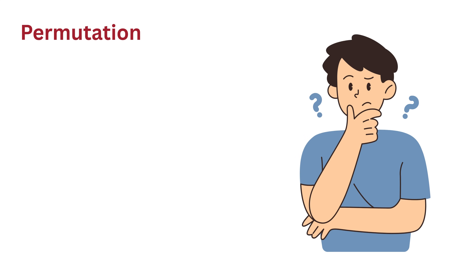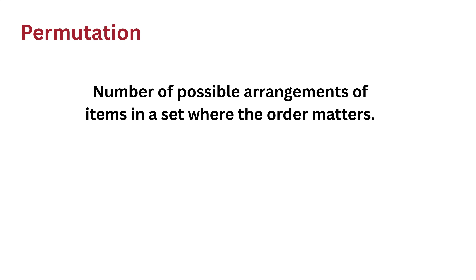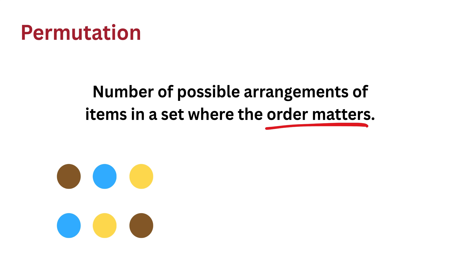Now let us understand permutations. A permutation is the number of possible arrangements of items in a set where the order matters. For example, imagine you have three colored balls: red, blue, and yellow. One possible permutation is red first, blue second, yellow third. Another could be blue first, yellow second, and red third. Even though the same three balls are used, each different order counts as a different permutation because the positions are different.